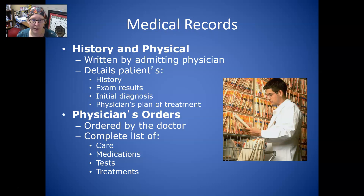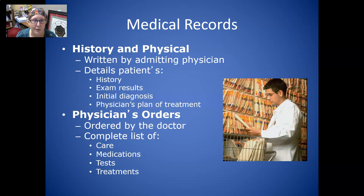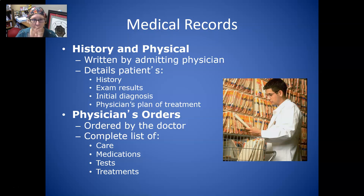When we had paper records, orders were written on a sheet of paper, and then the secretaries would have to decipher the orders and put them into the various computer systems. The physician's orders is a complete list of the patient's care, therapeutic procedures, medications, tests that have been ordered, and treatments. You have to have a physician order for everything — you can't even put oxygen on a patient without a physician's order.